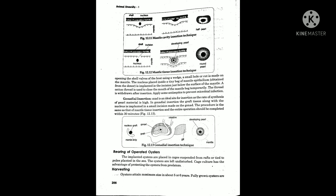In mantle tissue insertion, a small hole or cut is made on the mantle when the shell valves are opened. The nucleus wrapped in grafted tissue is implanted in the incision just below the surface of the mantle. After insertion, antiseptics are applied to prevent microbial infection, and the mantle is closed.